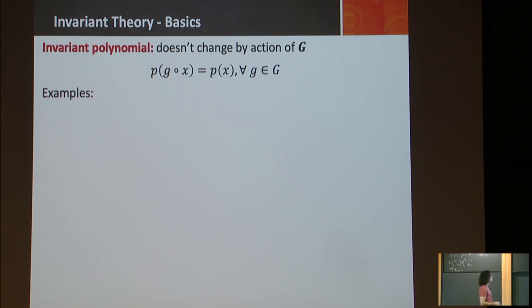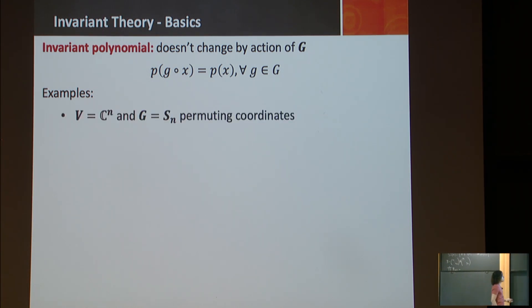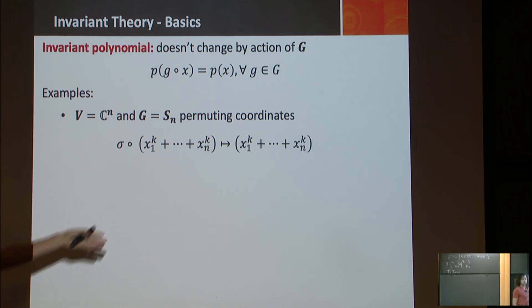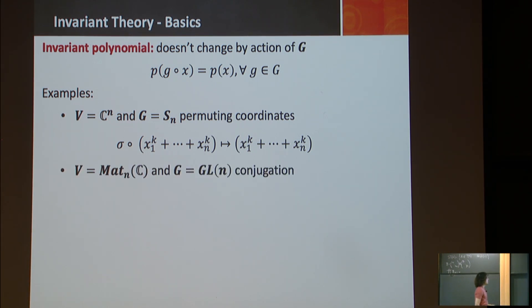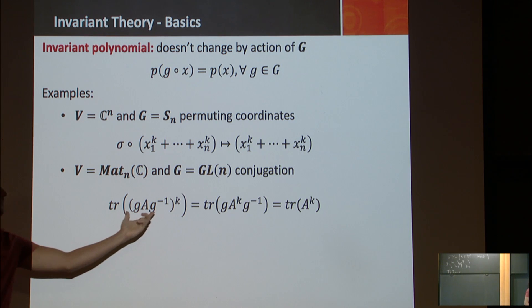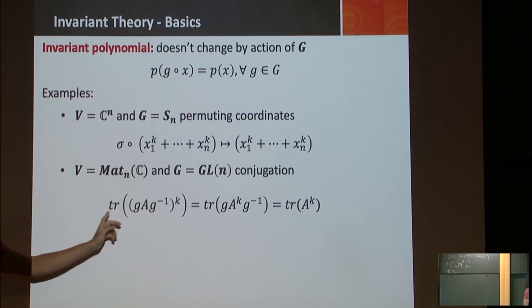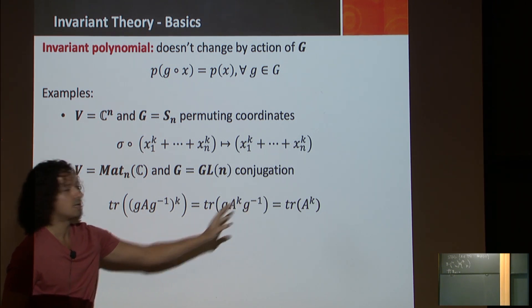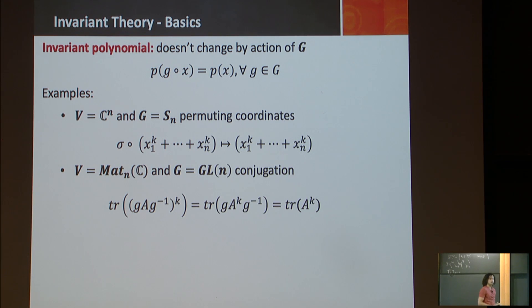Here are some examples. If I take the group C^n and the symmetric group permuting coordinates, some invariant polynomials are the sums of powers — if I apply any permutation, I get the sums of powers again. And if I have the matrix group with the conjugation action, the trace of the k-th power is invariant, because trace of G A^k G^{-1} equals trace of A^k by cyclicity of trace.